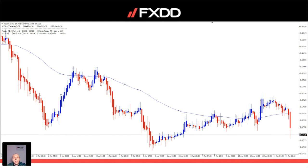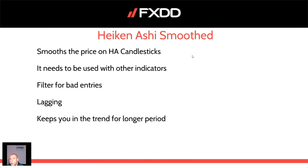This is how standard Heiken Ashi candlesticks look — this is the representation of price action coded through standard Heiken Ashi. We also have a different variation called Heiken Ashi Smoothed, which is more precise than standard Heiken Ashi. It usually needs to be used with other indicators. Heiken Ashi Smoothed was tested, if I'm correct, in 2013, and showed even better results than standard Heiken Ashi candlesticks. In my opinion, Heiken Ashi Smoothed is much better used in trading systems than in ordinary technical analysis.